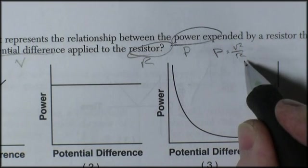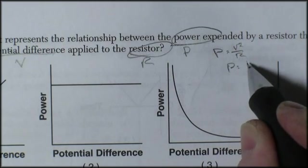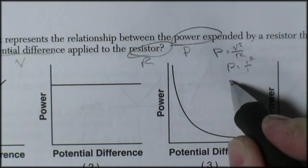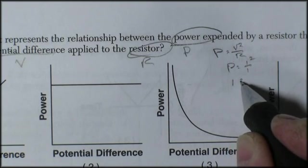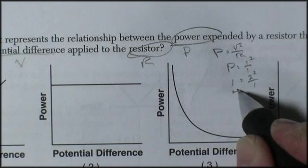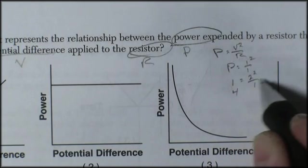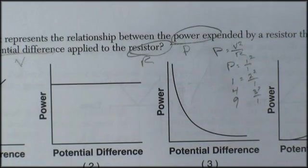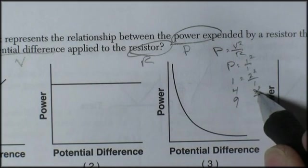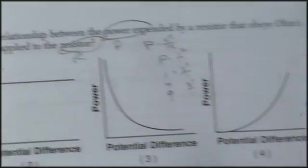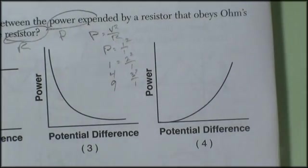So you could plug in some numbers. Power is 1 over 1, 1 squared over 1 is 1. Power is 2 squared over 1, which would be 4. Power is 3 squared over 1, which is 9. So as the voltage increases, the power increases exponentially. And that's going to be graph number 4.